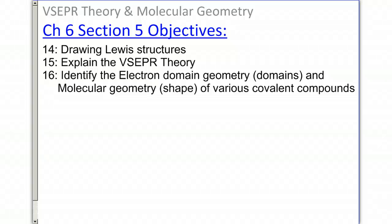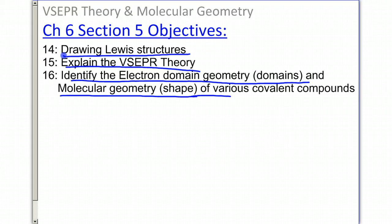Chapter 6, Section 5 is VSEPR Theory and Molecular Geometry. You have to be able to draw a Lewis structure in order to accomplish this section, so be sure that you've watched Section 4 and you feel adept to drawing Lewis structures. We're going to explain the VSEPR theory, and we're going to identify electron domain geometry, which is number of domains, and the molecular geometry, or the shape, of various covalent compounds.